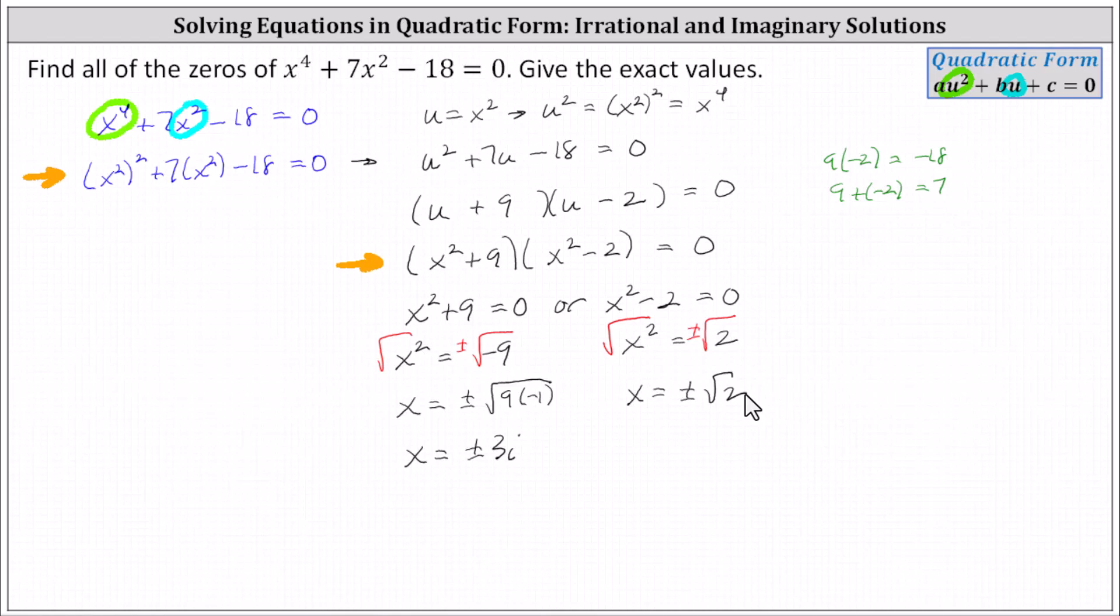Notice we have two imaginary solutions and two irrational solutions. These solutions are negative three i, positive three i, negative square root two, and positive square root two.